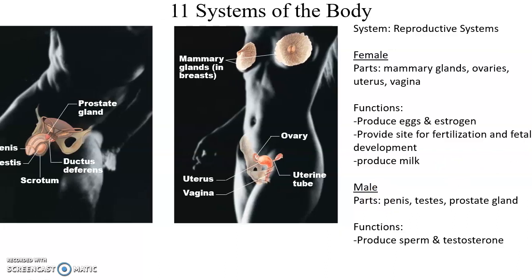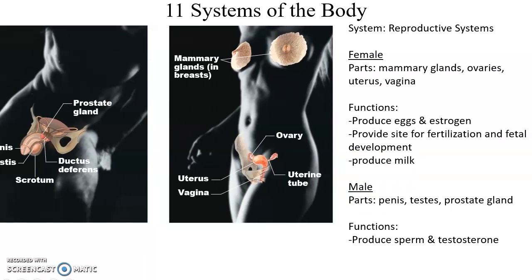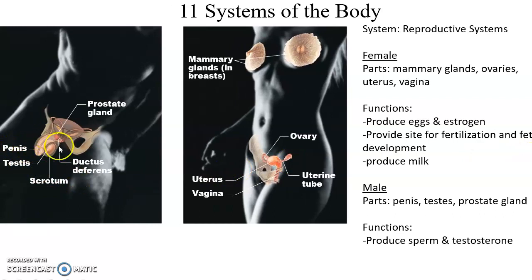The reproductive systems are two separate but similar systems. The female system includes mammary glands, ovaries, uterus, and vagina. The ovaries produce egg cells and hormones like estrogen and progesterone; the uterus provides a site for fetal development; and mammary glands produce milk. The male system includes the penis, testes, scrotum, and prostate gland, focused on sperm production and hormones like testosterone.